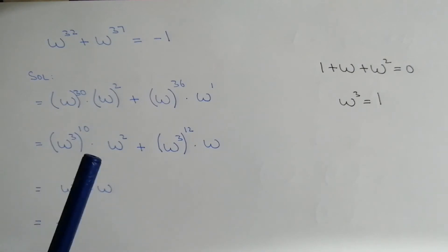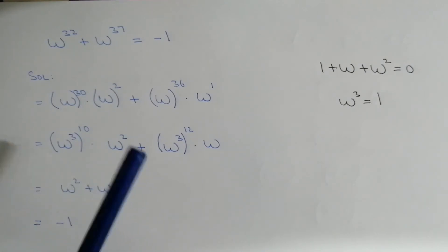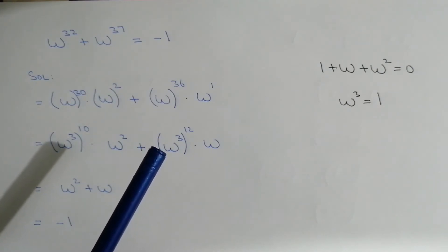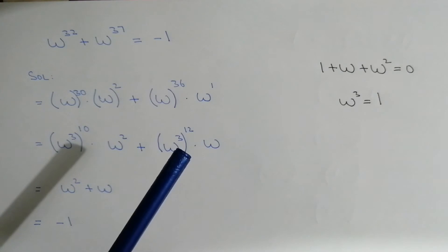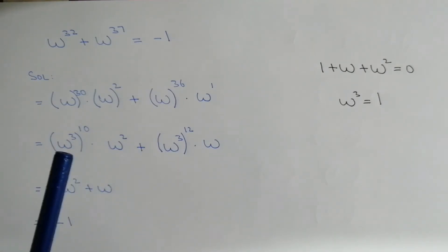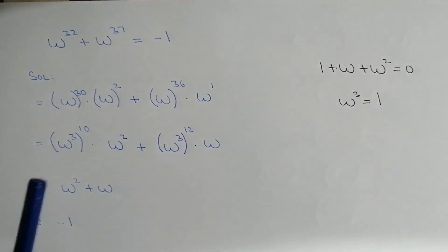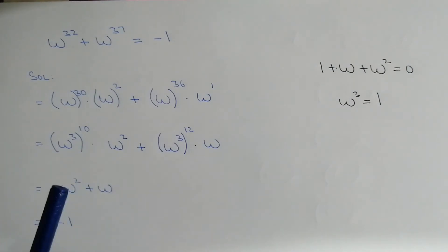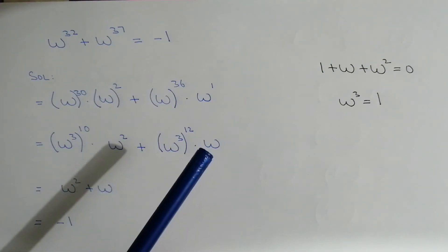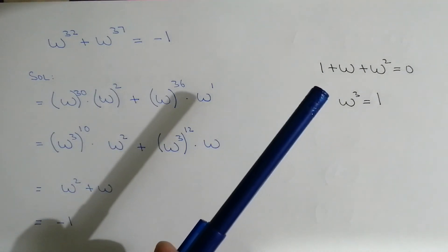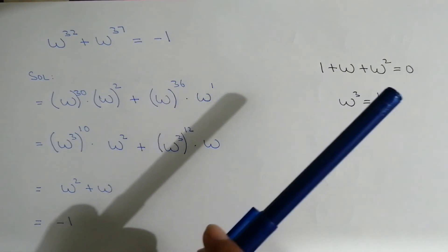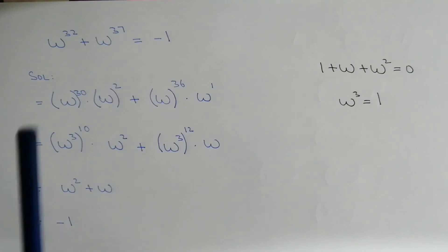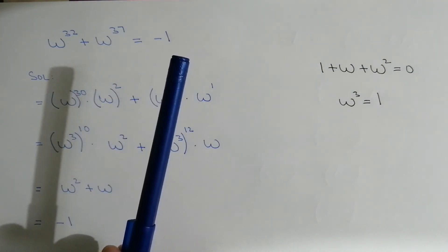Omega power 3, whole power 10, into omega square, plus omega power 3, whole power 12, into omega. Now we know that omega cube is equal to 1, so 1 power 10 is 1. We are left with omega square plus omega. From the equation 1 plus omega plus omega square equal to 0, we get omega plus omega square equal to minus 1. So left hand side is equal to right hand side.